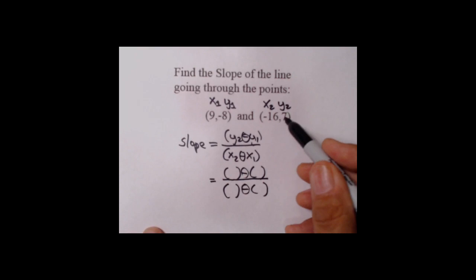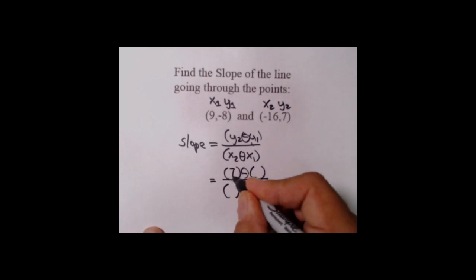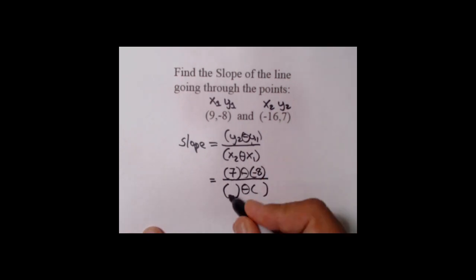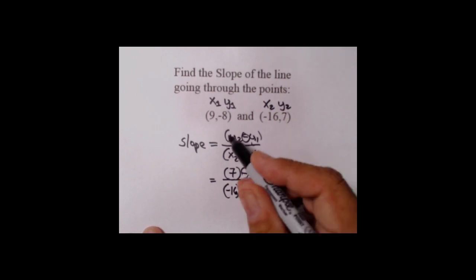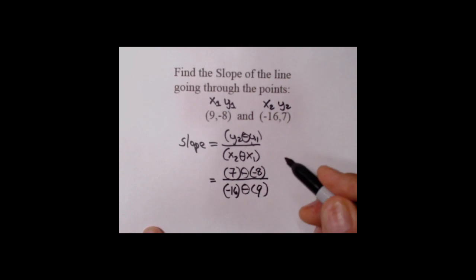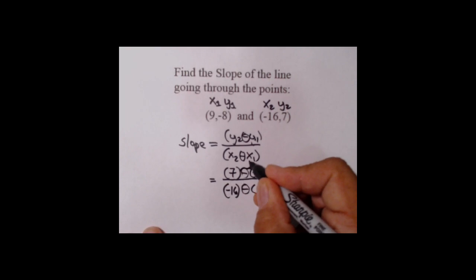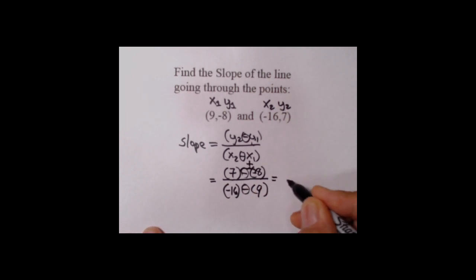Make sure you get everything in the right order. Y2 is 7, Y1 is negative 8, X2 is negative 16, X1 is 9. Any number that has more than one sign in front, be sure to use the rules to combine the signs. That happens upstairs in front of the eight—these two minuses become a plus.